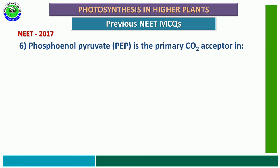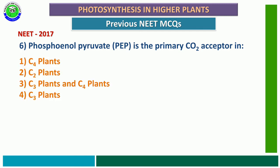Question number 6 from NEET 2017: Phosphoenolpyruvate (PEP) is the primary CO2 acceptor in — first option, C4 plants; second option, C2 plants; third option, C3 and C4 plants; fourth option, C3 plants. The correct answer is C4 plants. In C4 plants, mesophyll cells contain PEP carboxylase enzyme, and in its presence, phosphoenolpyruvate acts as the primary CO2 acceptor for carbon dioxide fixation.